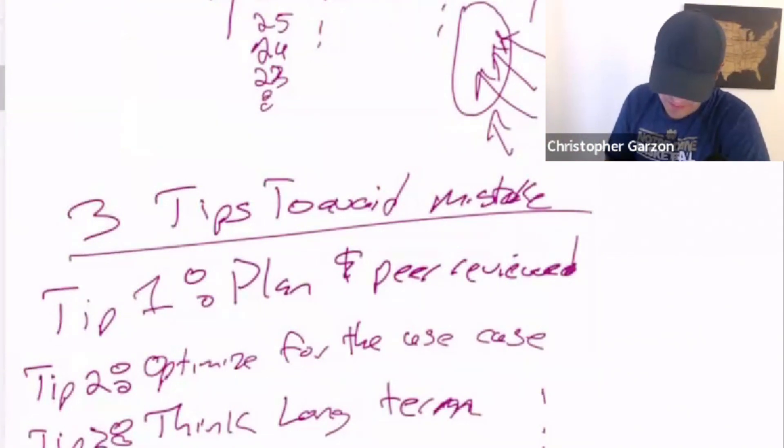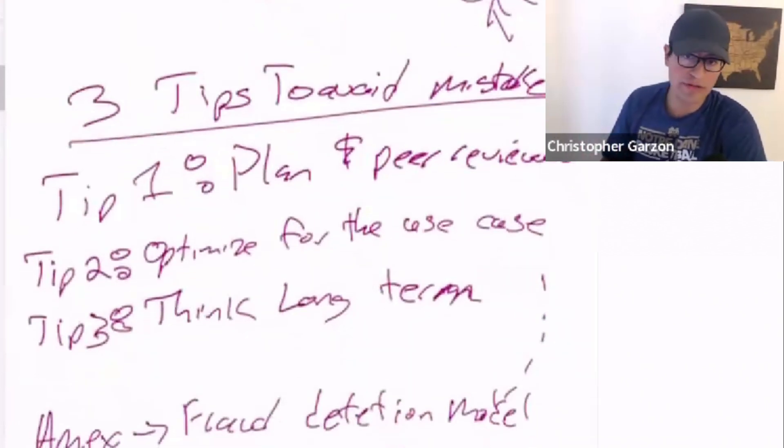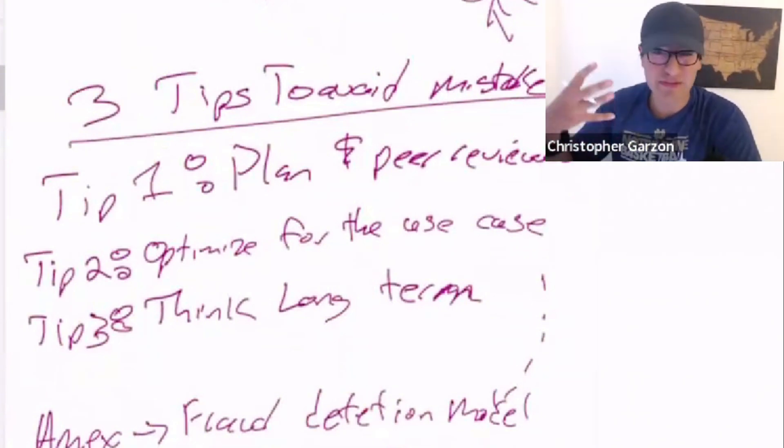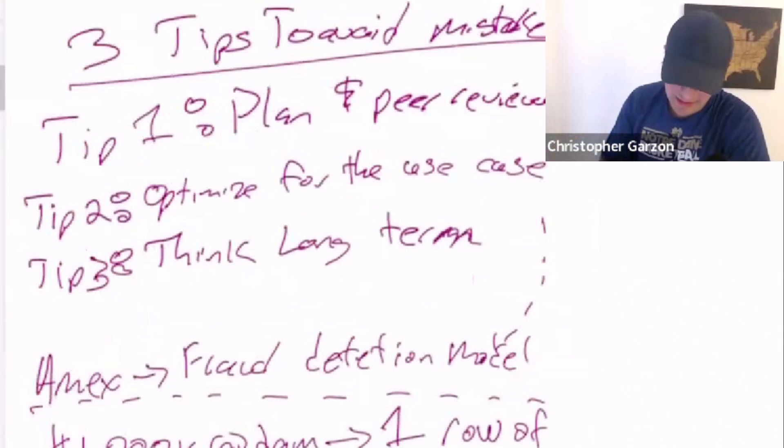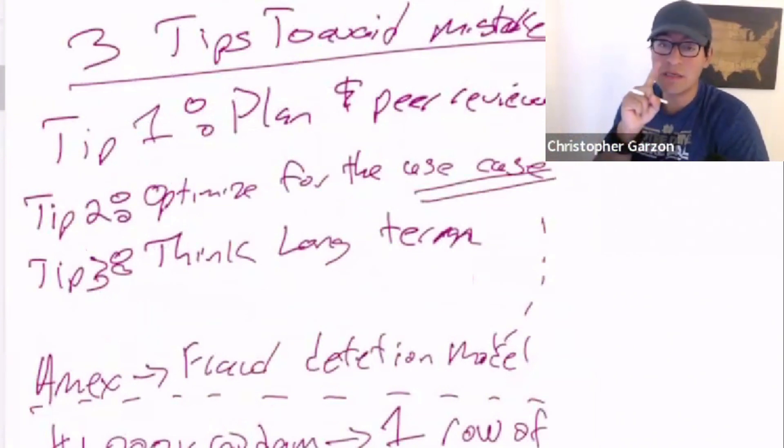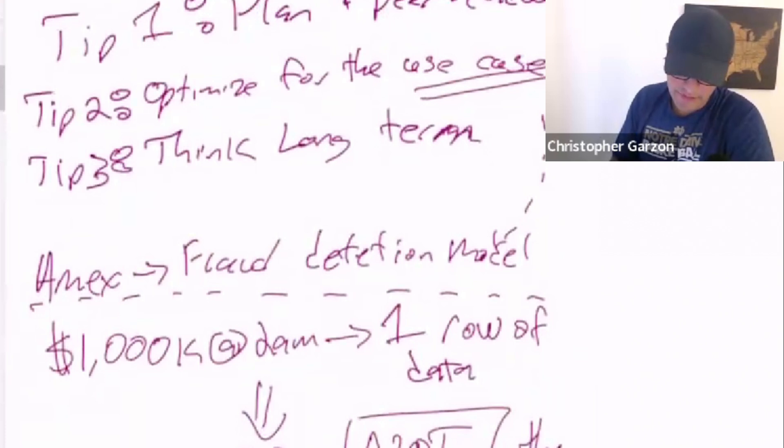And so optimize for the use case. Not, repeat, not the cost. Not the cost. I'll see a lot of people say, well, our data lake is cheaper or a data warehouse is fancier or it's faster to spin up. It doesn't matter. Optimize for the use case. Now, with that in mind, the reason I put tip number three, which is think long term here, is because that use case might not be so clear until a year from now. So, for example, you might be thinking, well, if I want to pull one row of data, I can do that in a data warehouse.